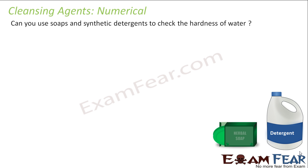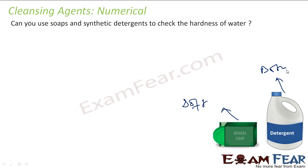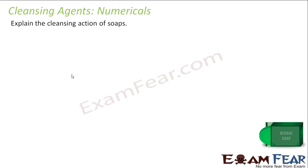Can you use soap and detergent to detect hard water? Yes. Soap forms lather only in soft water, while detergent forms lather in both. Take soap and add it to a beaker of water: if you get lather, it is soft water; if you don't get lather, it is hard water.